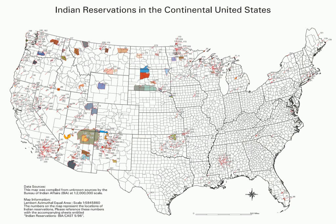The passage of the Indian Removal Act of 1830 marked the systematization of a U.S. federal government policy of forcibly moving native populations away from European populated areas. One example was the five civilized tribes, who were removed from their native lands in the southern United States and moved to modern-day Oklahoma in a mass migration known as the Trail of Tears. In 1851, the United States Congress passed the Indian Appropriations Act, which authorized the creation of Indian reservations in modern-day Oklahoma.